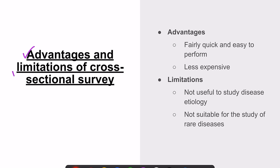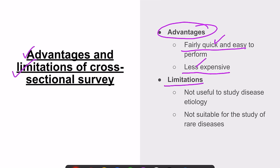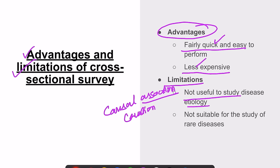The advantages and disadvantages of cross-sectional surveys: advantages include that it is fairly quick and easy to perform, and most research falls under cross-sectional or descriptive study design. It is comparatively very less expensive. On the other hand, limitations include that it is not useful to study disease etiology, as we can find only association — not causation — in cross-sectional studies. These are also not suitable for the study of rare diseases, because rare diseases may not appear in the population when studying prevalence.